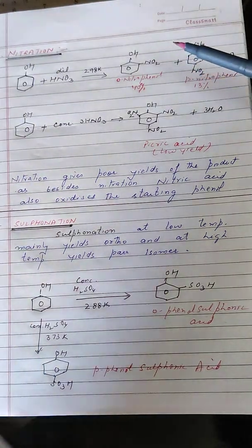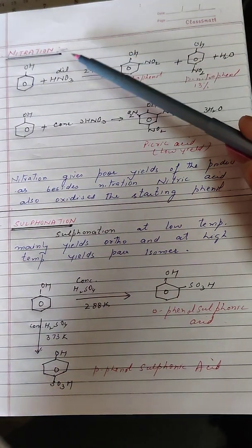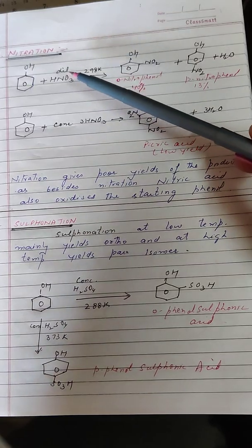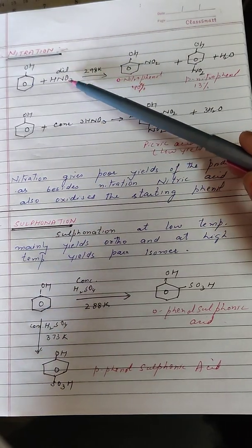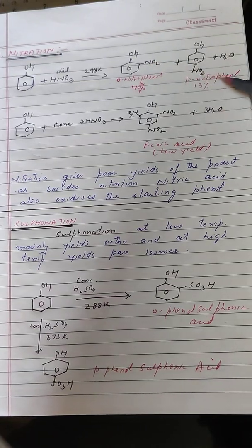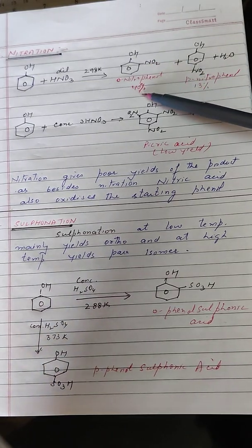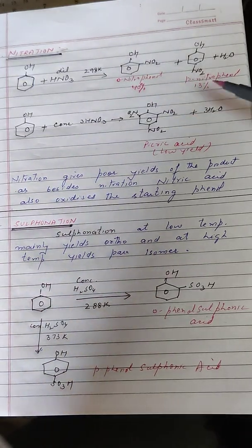The next electrophilic reaction is nitration. Phenols undergo nitration with dilute nitric acid. We get a mixture of ortho and para nitro compounds, but the yield is very poor — only about 40% of the ortho isomer and only about 13% of the para isomer.